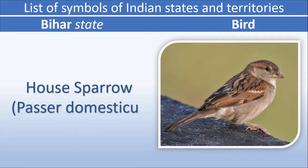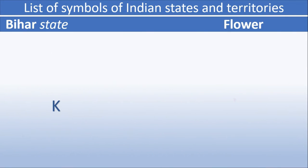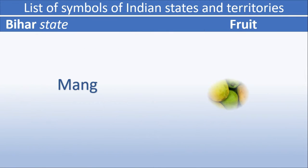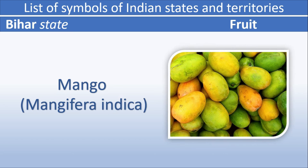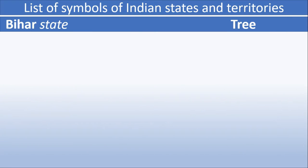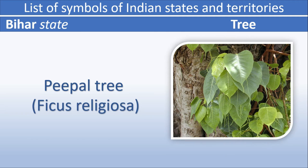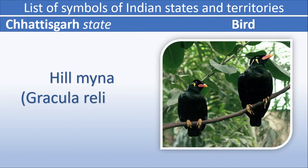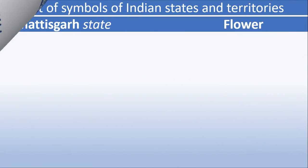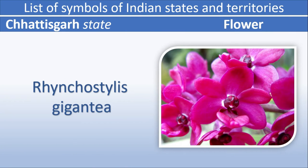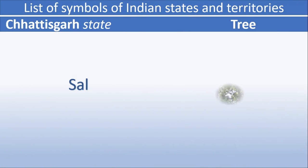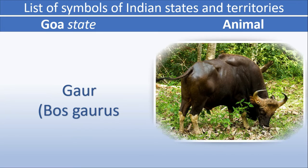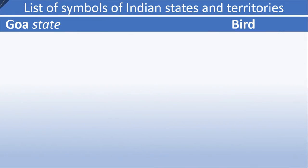Bihar animal: Gaur. Bihar bird: House Sparrow. Bihar flower: Kachnar. Bihar fruit: Mango. Bihar tree: Peepal Tree. Chhattisgarh animal: Wild Buffalo. Chhattisgarh bird: Hill Myna. Chhattisgarh flower: Rhinoceros. Chhattisgarh tree: Saal.